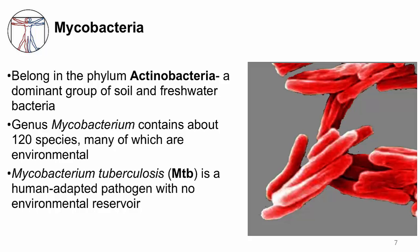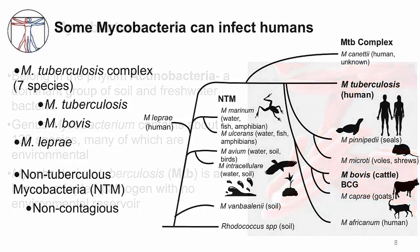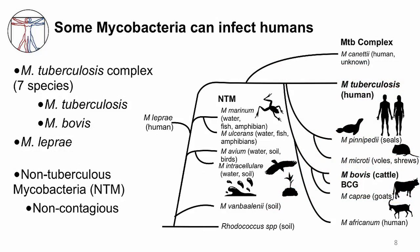The genus Mycobacterium contains about 120 species, and many of them are in the environment in the soil and water. One mycobacterium is different: Mycobacterium tuberculosis does not have an environmental reservoir. Mycobacterium tuberculosis, or MTB, is a human-adapted pathogen — humans are its reservoir. Although many mycobacteria are environmental, there are some, like MTB, that can infect humans.